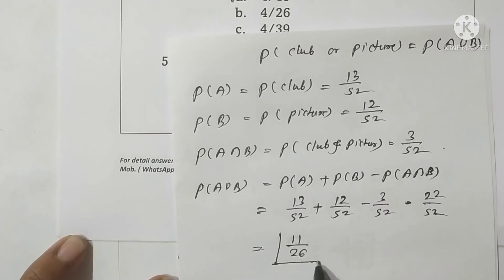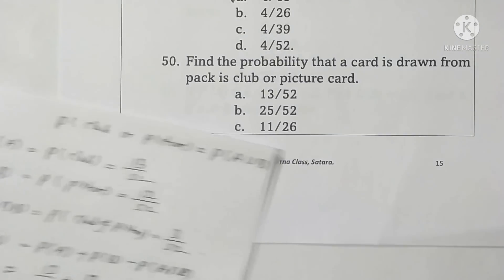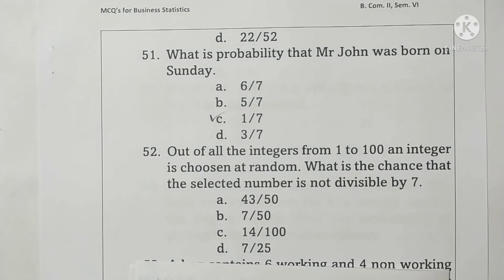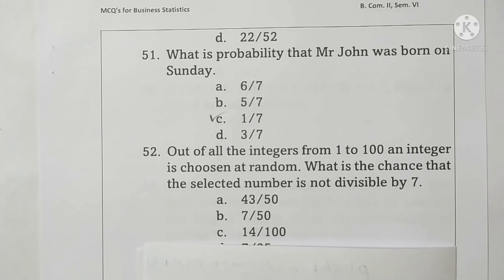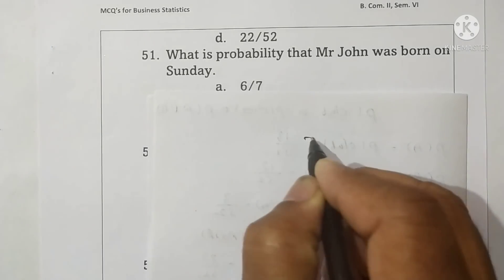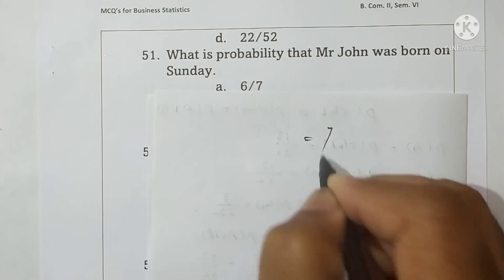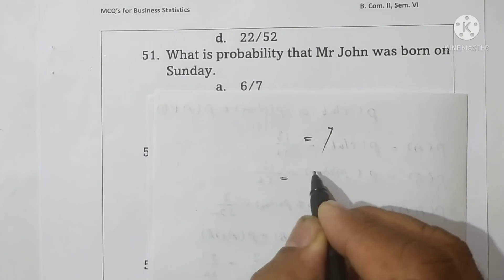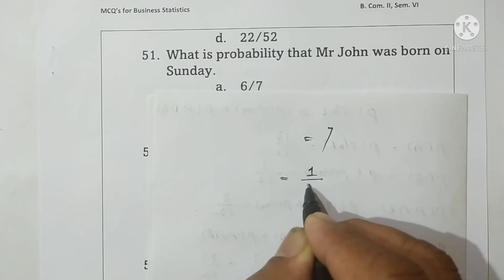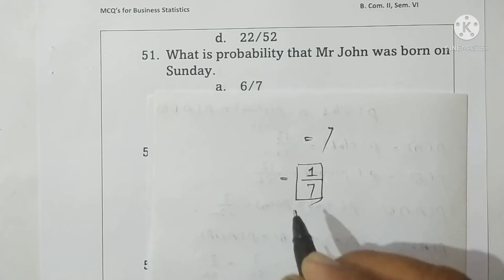Question 51: What is the probability that Mr. John was born on Sunday? There are 7 days in a week, so total sample space is 7. Sunday occurs only once, so the probability is 1 upon 7. Option C is correct.